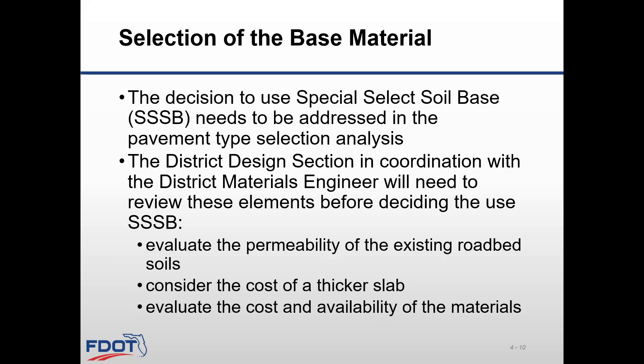Section 4.3 of the Rigid Pavement Design Manual outlines the decision process to use special select soil base over an asphalt base option. This selection process needs to be addressed in the pavement type selection analysis for any new pavement or reconstruction. The district design section, in coordination with the district materials engineer, will need to evaluate the permeability of the existing roadbed soils, taking into account the cost of a thicker slab, and the cost and availability of materials before deciding to use the special select soil base.